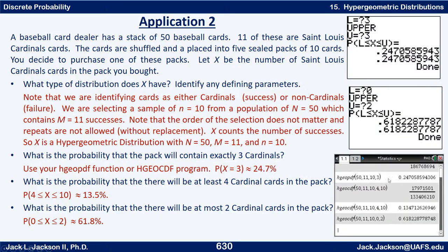Here's how it looks on the TI Nspire. For P(X=3) we can use HGO PDF 50, 11, 10, 3 — or equivalently HGO CDF 50, 11, 10, 3, 3 and get the same answer. For P(4 ≤ X ≤ 10) we use HGO CDF 50, 11, 10, 4, 10. For P(X ≤ 2) it's HGO CDF 50, 11, 10, 0, 2. Pressing Enter gives a fraction; CTRL+Enter gives the decimal, which is what we'll usually need.